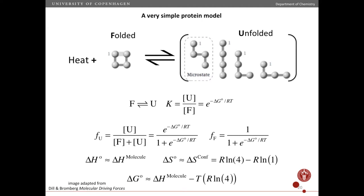Here we have four conformations with the same energy for the unfolded state, and one for the folded state. So we can approximate the standard entropy change as the change in conformational entropy, given by the change in degeneracy — the entropy of the unfolded state where we have a degeneracy of four, minus the entropy of the folded state with a degeneracy of one. For this simple model, we can approximate delta G standard using this equation.